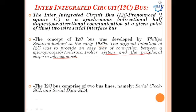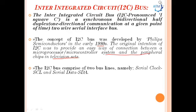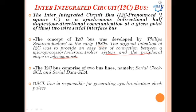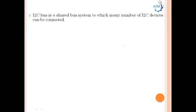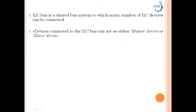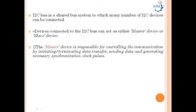The I2C bus comprises two bus lines: the serial clock line (SCL) and the serial data line (SDA). The SCL line is responsible for generating synchronization clock pulses, and the SDA line is responsible for transmitting serial data across devices. I2C is a shared bus system to which many I2C devices can be connected. Devices on the I2C bus can act as either master or slave. The master device is responsible for controlling communication by initiating or terminating data transfer, sending data, and generating synchronization clock pulses.